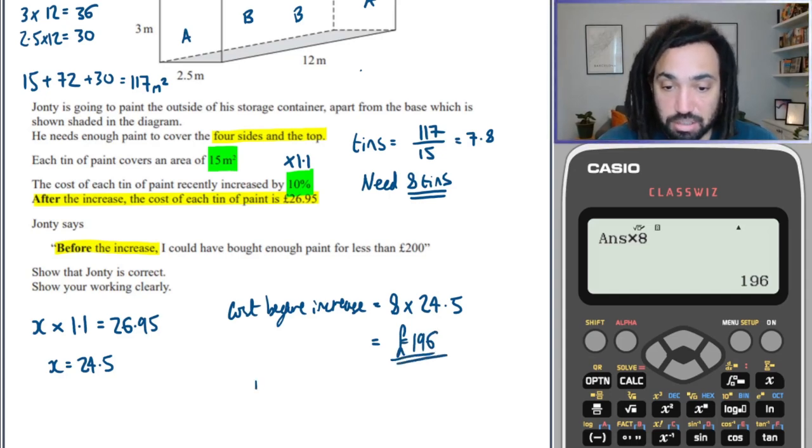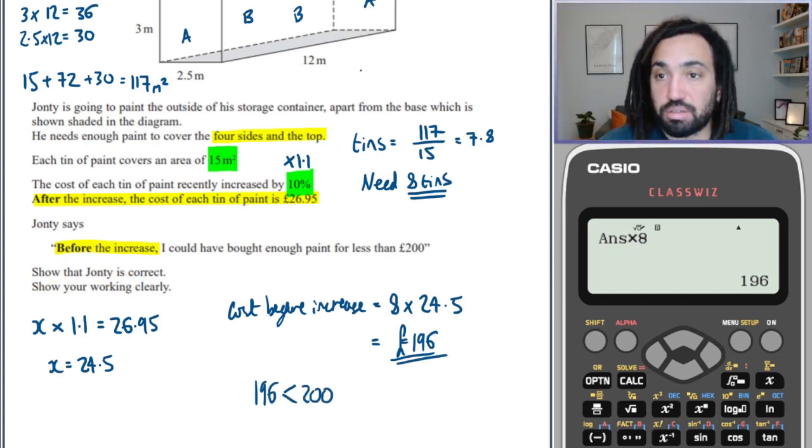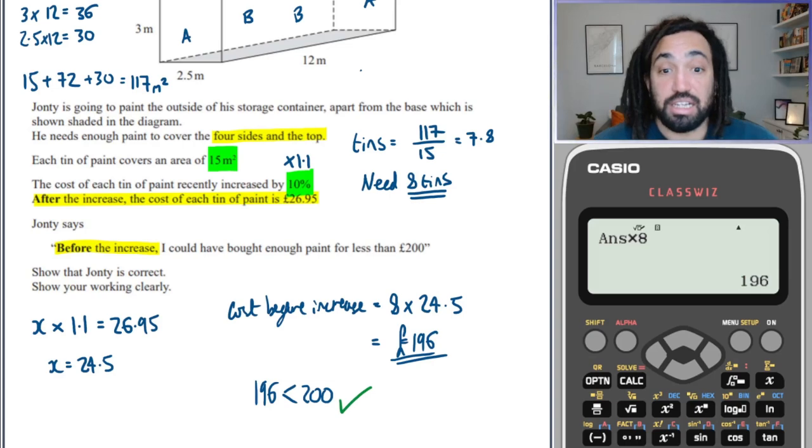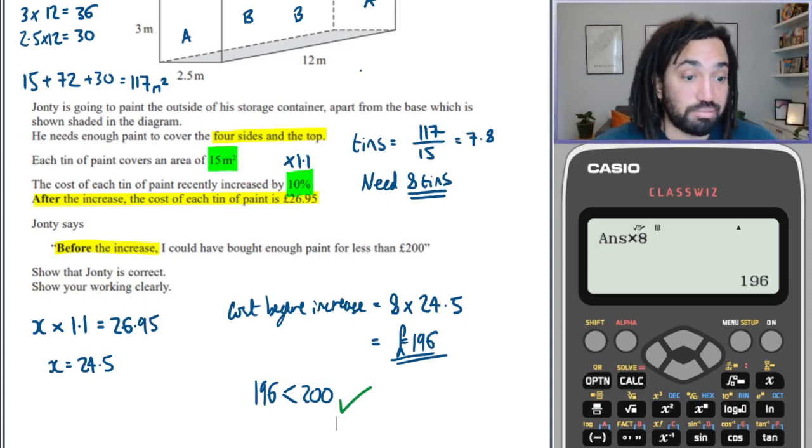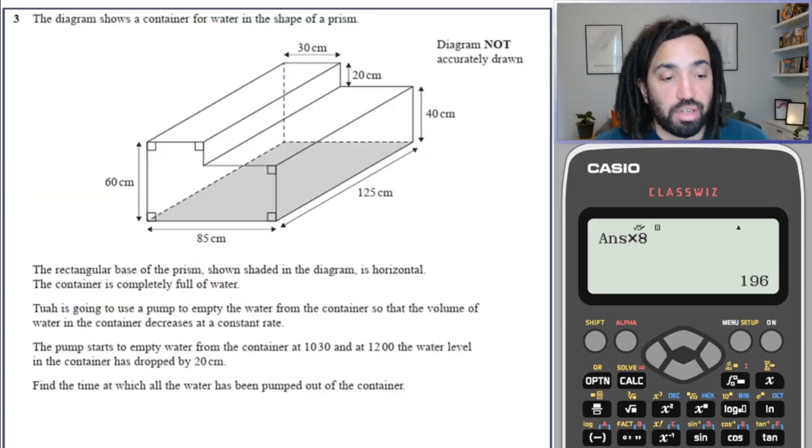And then just to show it's correct, obviously 196 is less than 200. So that shows that he was correct. And he should have got it in the sale. Lucky.